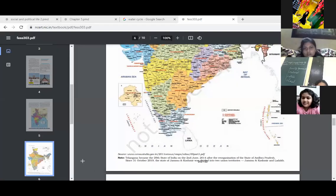Here you can see the important fact that Telangana became the 29th state of India on 2nd June 2014 after the reorganization of the state of Andhra Pradesh. It means it came out from Andhra Pradesh. Since 31st October 2019, the state of Jammu Kashmir was divided into two union territories, one is the Jammu Kashmir Union Territory and the second one is Ladakh.